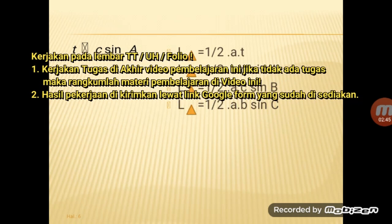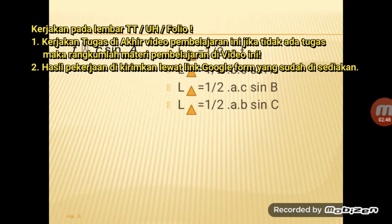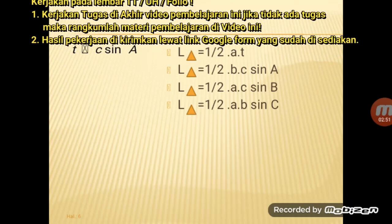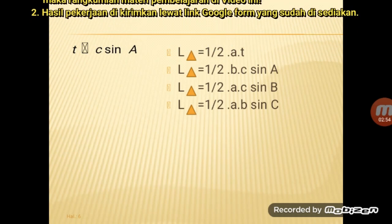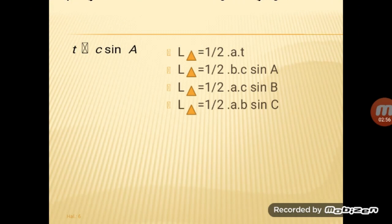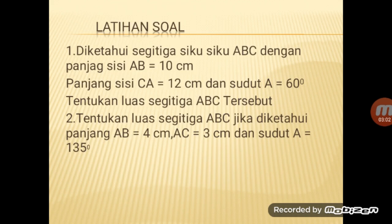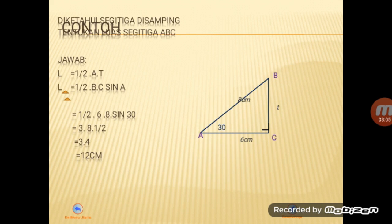Begitu juga untuk luas segitiga, bisa ditulis setengah kali A kali C kali sin B, atau setengah A kali B kali sin C. Untuk contoh, diketahui segitiga di samping dengan panjang AC adalah 6 cm, panjang AB adalah 8 cm, sedangkan BC adalah tingginya, dan sudut A itu adalah 30 derajat. Tentukan luas segitiganya.